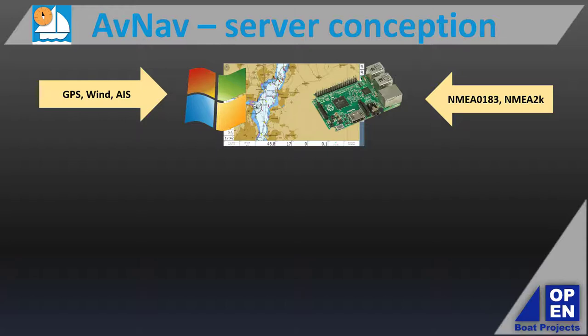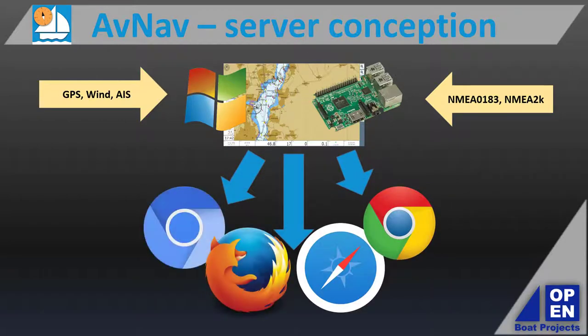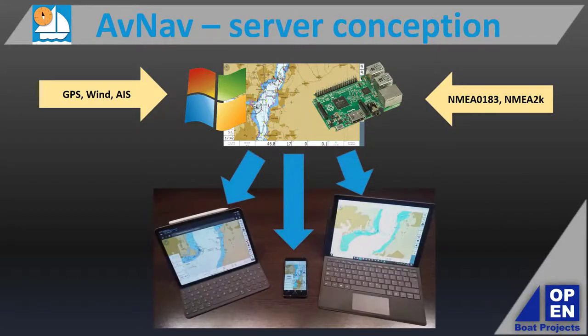The actual access to the charts occurs via web browser. Since the program is based on a server, the website can be accessed from any available device simultaneously — be it Android, iOS, or Windows-driven — as long as the AvNav server is in the same network as the devices. That is a convenient and helpful property.